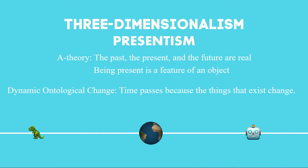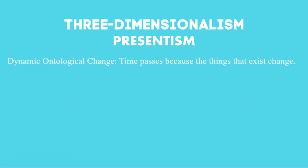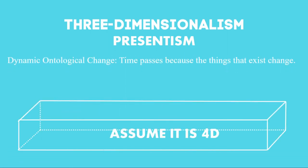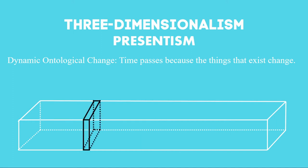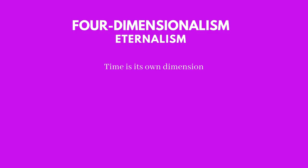This view of the dynamic ontological change is probably the most challenging to understand, so let's see another example. Imagine that this block is four-dimensional, and signals all points in space and time. So, three-dimensionalism will select a specific vertical section from the block, and claim that this is the present. Therefore, it will say that all the things that exist are the ones in this section. Finally, when asked about temporal passage, a three-dimensionalist will only move the section a little bit more to the right, towards the future.